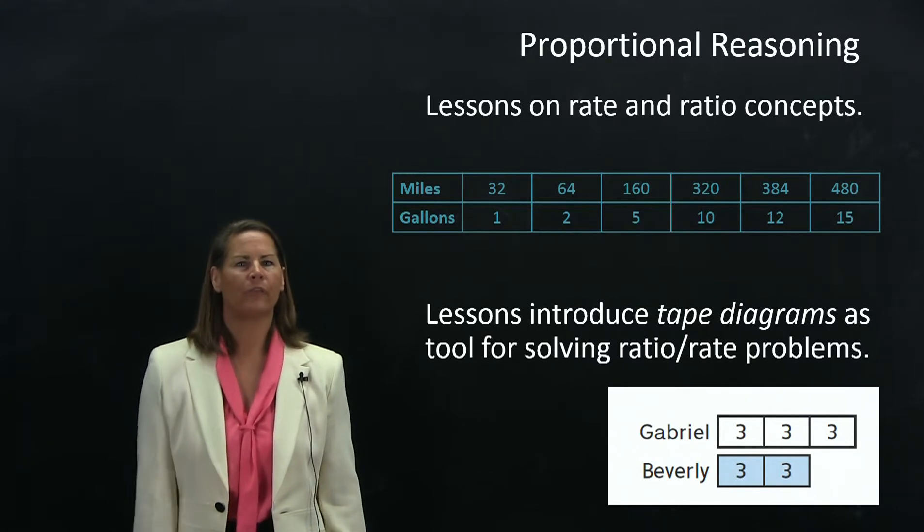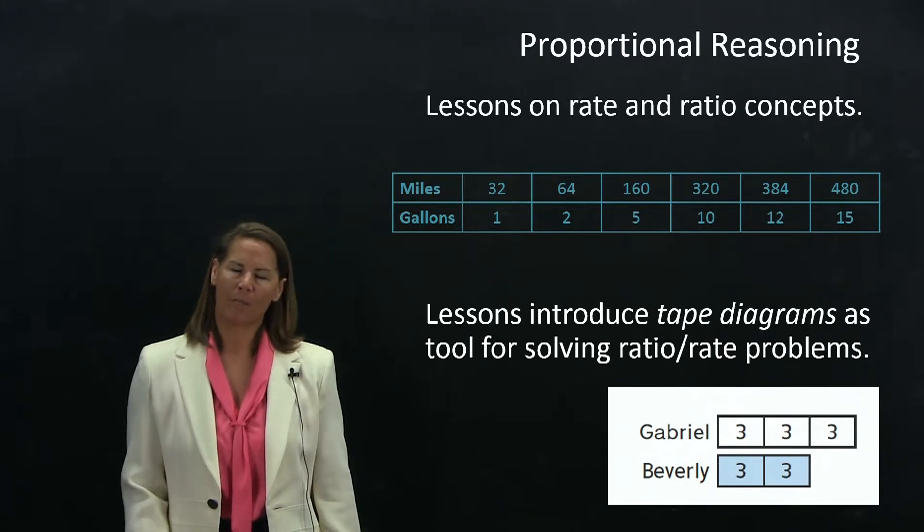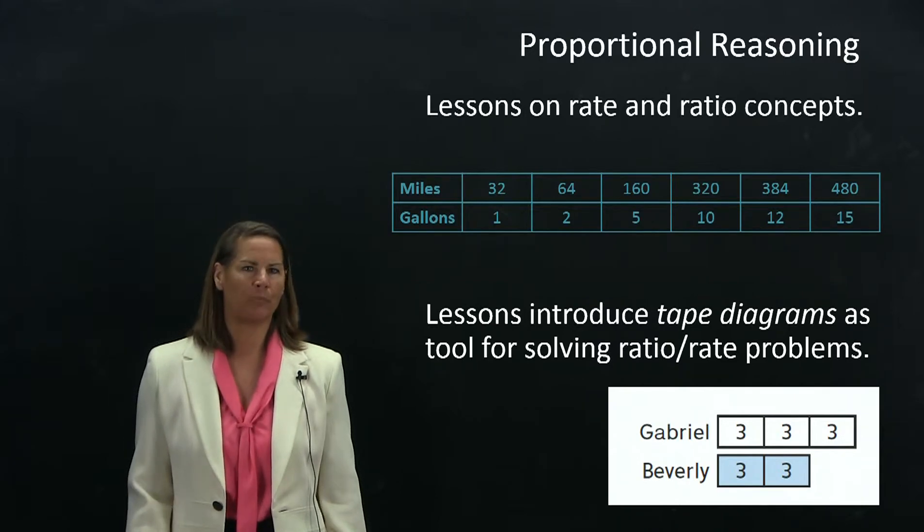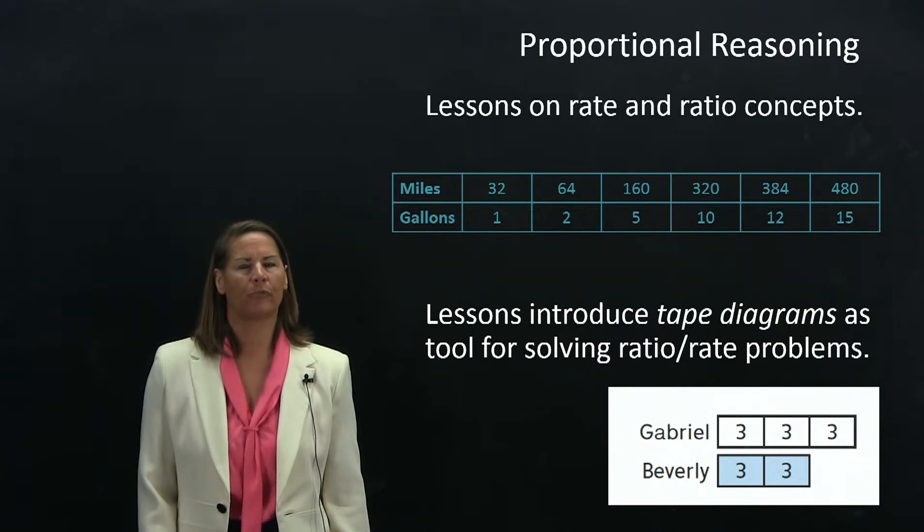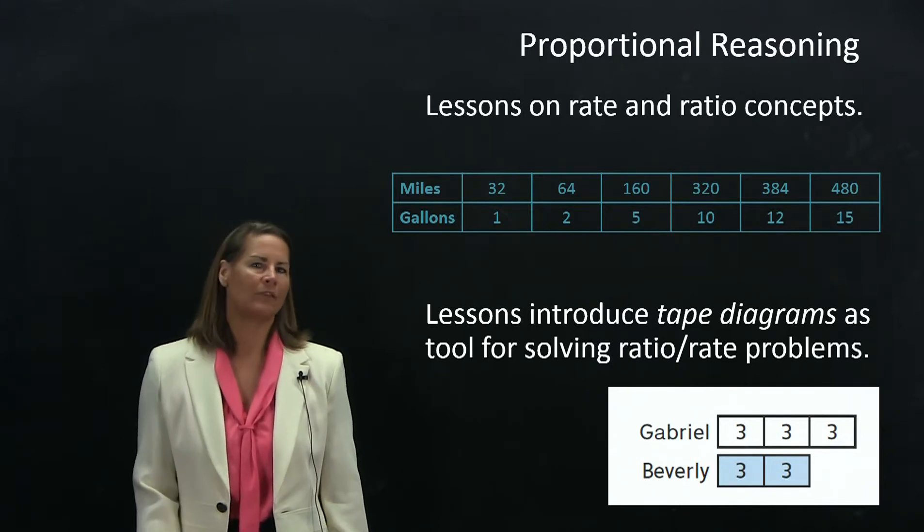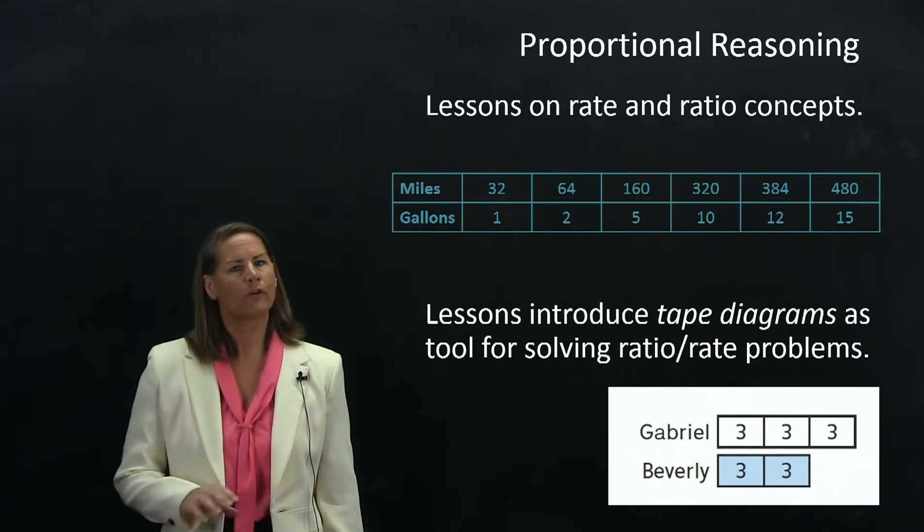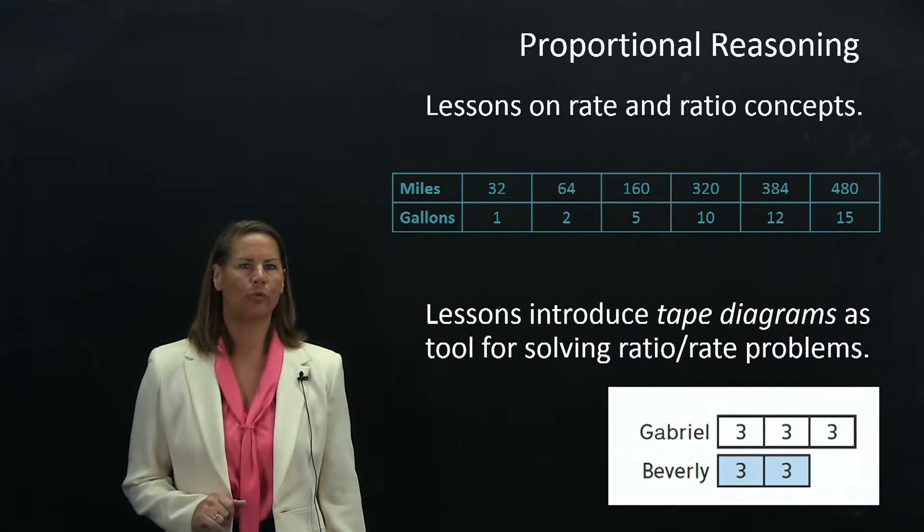The other thing you see on this screen is a tape diagram. Common Core uses a lot of models and diagrams and encourages that for problem solving and modeling problems. We've taken some of the diagrams from Common Core, field tested them and found that this one was particularly successful with kids for solving problems around proportional relationships.